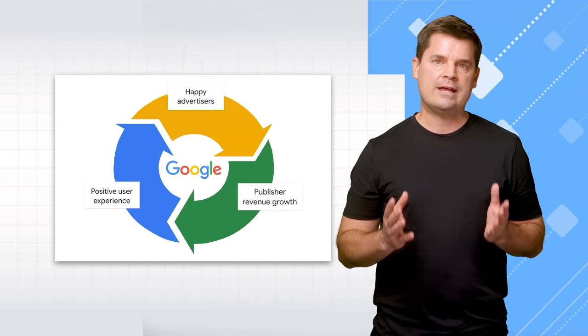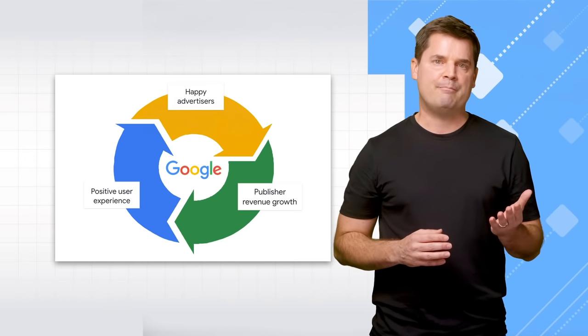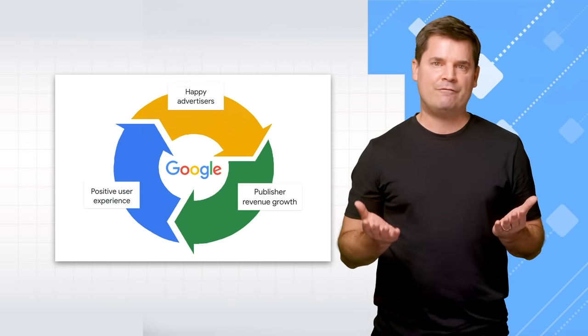To us, success looks like this: all are treated equally and find value in their interactions with Google. We try to strike a balance — help publishers earn revenue and help advertisers distribute their messaging. But this is difficult. With enforcement, sometimes advertisers may think that we don't go far enough, while publishers may think we go too far. When we create these policies, we must keep the needs of the entire industry in mind. We constantly review our policies and enforcement to be fair and thorough, while being mindful of societal changes and newsworthy global events.